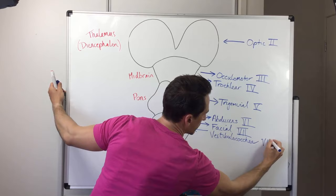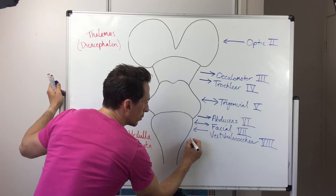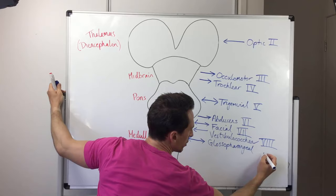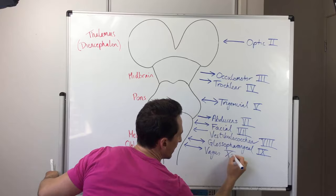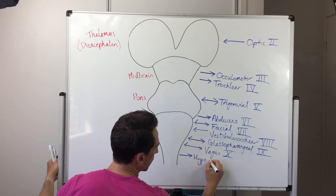In the medulla itself, three important cranial nerves: glossopharyngeal, which is both sensory and motor, is cranial nerve nine. The vagus nerve, both sensory and motor, is cranial nerve ten. And the hypoglossal, which is a motor nerve, is cranial nerve twelve.